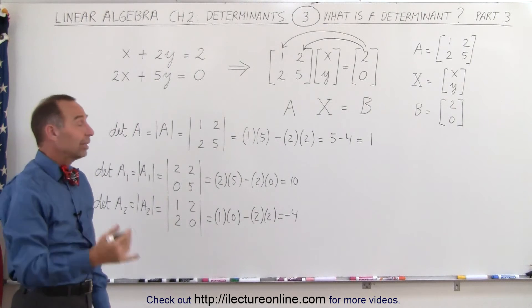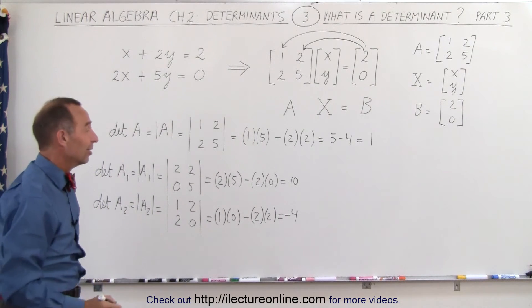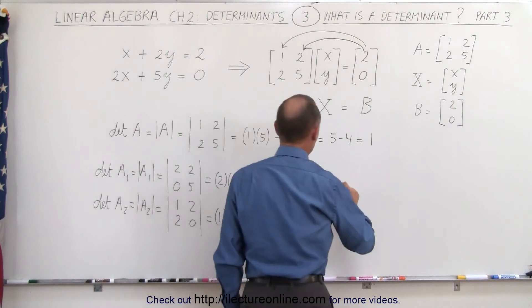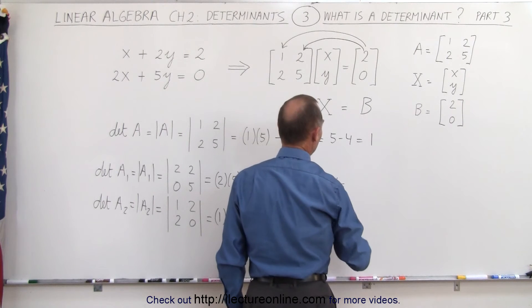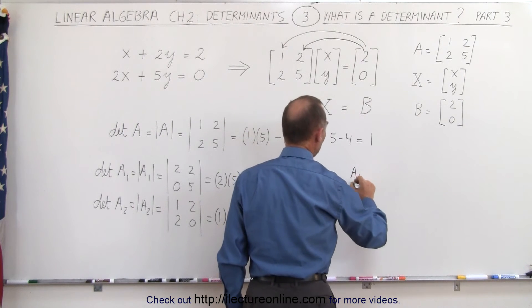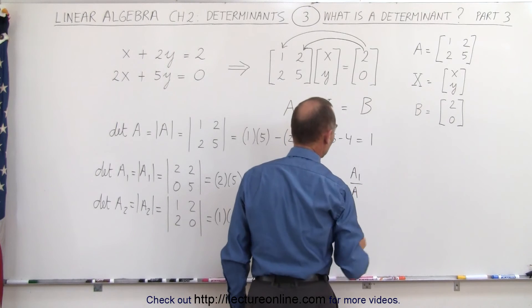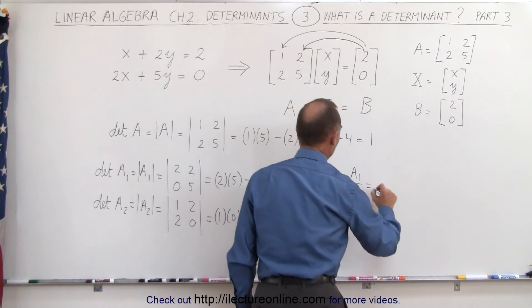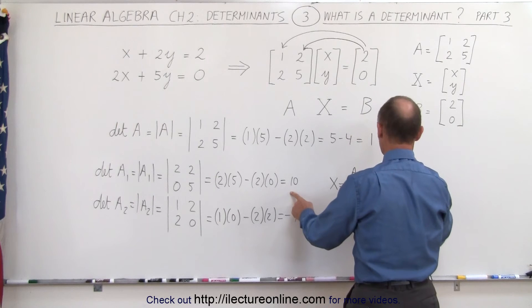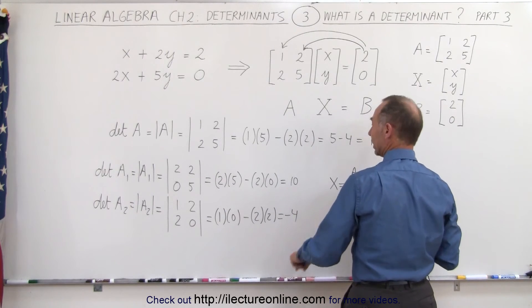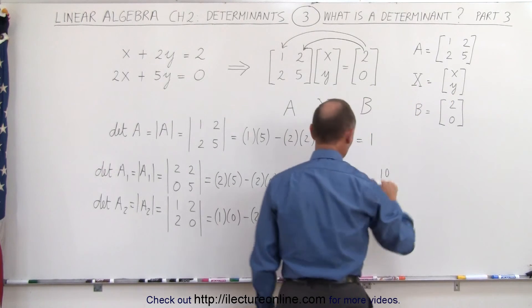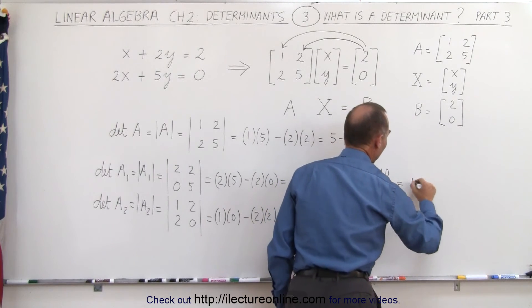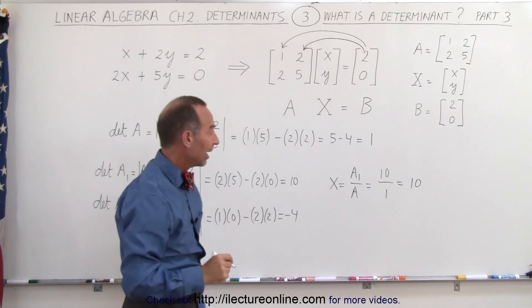Now, we can find the value for x. x is defined as the determinant A1 divided by the determinant A, which equals 10 divided by 1. In other words, x equals 10.